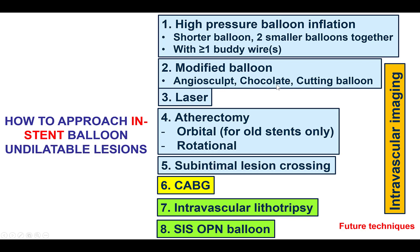The third option is to use the laser — and this is one case where contrast can be used simultaneously during laser activation, causing an acoustico-mechanical effect that can modify the plaque. Fourth, one can perform atherectomy, although this carries risk of dislodging metallic material distally. Orbital atherectomy should be done only for old stents, not fresh stents. Rotational can be done for either, but once again carries some risk. The fifth option is to go around the lesion and re-enter using chronic total occlusion techniques, which requires experience and expertise in subintimal re-entry techniques. The sixth option, if everything fails, is to send the patient to coronary artery bypass graft surgery.